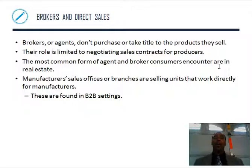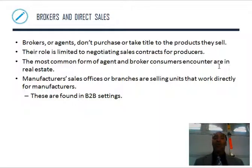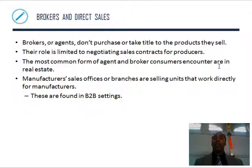Brokers and direct sales. Brokers are agents — California is very broker-centric. They don't purchase or take title to the products they sell; their role is limited to negotiating sales contracts for producers. The most common form consumers encounter is in real estate — a real estate agent isn't going to buy the house and then sell it to you. Manufacturers' sales offices and branches are selling units that work directly for manufacturers, found in business-to-business settings.